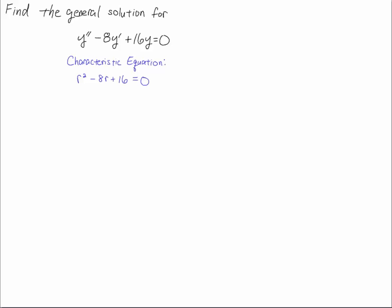I'm going to factor this characteristic equation. We get r minus 4 times r minus 4, and you notice that gives us repeated roots of r minus 4 squared.